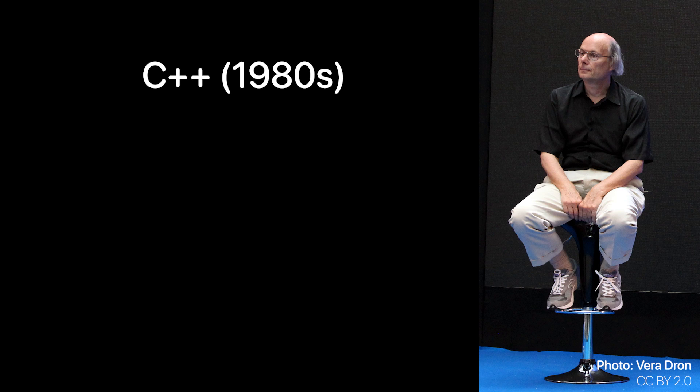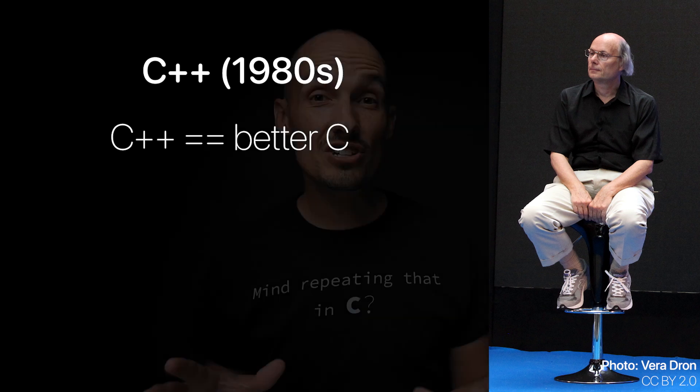Bjarne Stroustrup, the creator of C++, describes C++ as a better C. Some have debated the "better" part, but let's just say that C++ is C with some additional language features like data abstraction, object-oriented programming, and generic types. Dennis Ritchie and Bjarne Stroustrup were not rivals — they were friends, and Bjarne was simply trying to build off of Dennis Ritchie's work. For a long time people used the term C/C++ to describe situations where the distinction between the two languages didn't really matter.